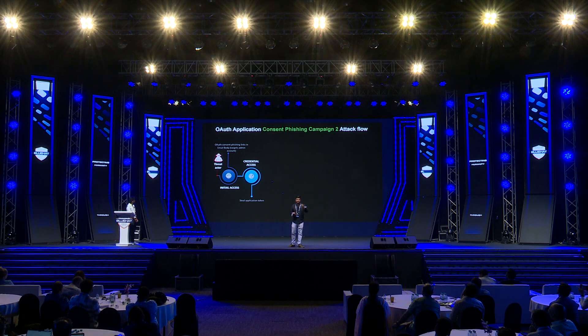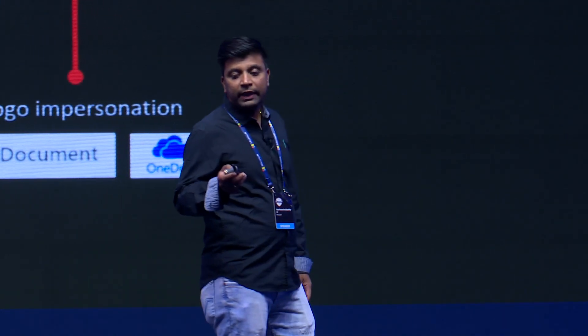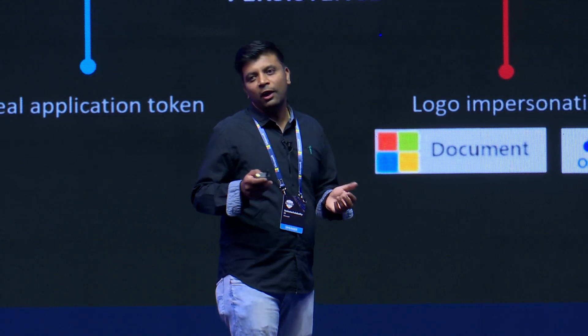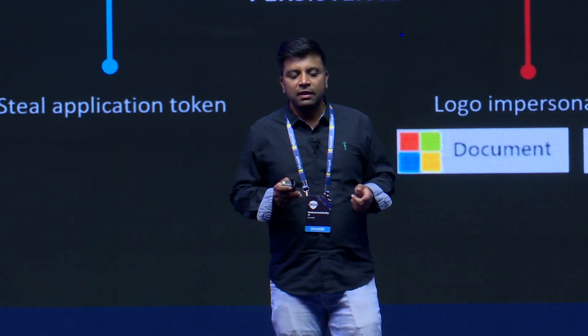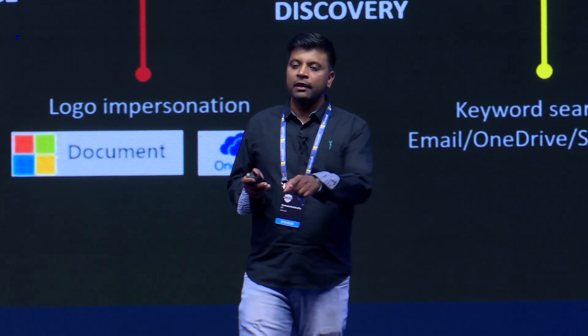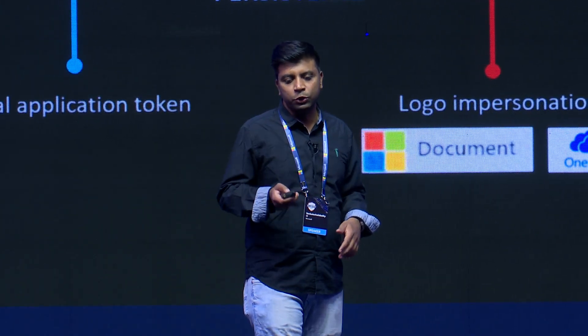Similar to Campaign One, Campaign Two uses consent phishing email to steal the application token, but here the target is admin accounts. For persistence, the attacker uses a compromised tenant, and the compromised admin account creates a new admin user. The new app is created under this newly created admin user to bypass machine learning detection algorithms. The collection scope expanded beyond email to include OneDrive and SharePoint. The same inbox rule technique was used for exfiltration.